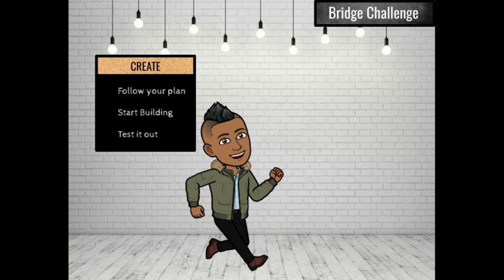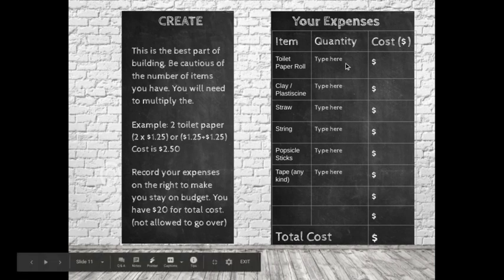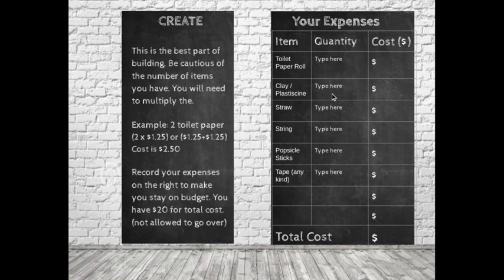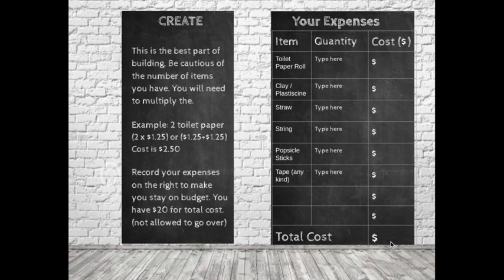This is the best part — Create. Follow your plan. Remember you only have one plan. Start building and test it out. Be cautious of the number of items you have; you will need to multiply them. Two toilet paper rolls could mean 2 times $1.25, or you can add them: $1.25 plus $1.25 gives you $2.50. Please record your expenses on the right where it says 'type here' — that's where you can type, and over here is the cost. Depending on how much quantity you have, you might need to double it, triple it, quadruple it, or even more. Make sure you have a subtotal, and at the very end calculate all the totals for your total cost. You are not allowed to go over $20 — that is budgeting.